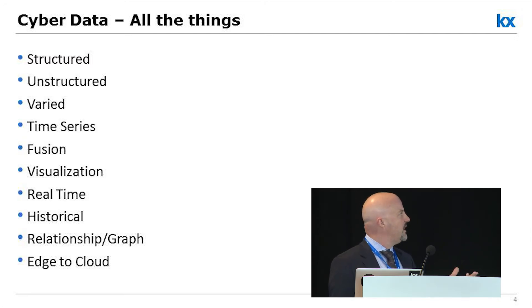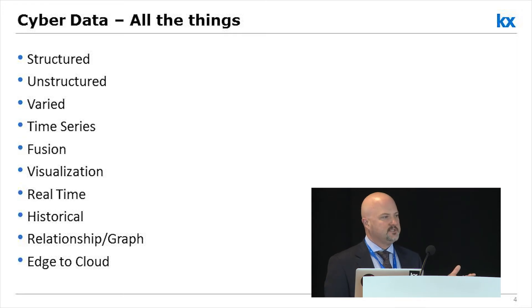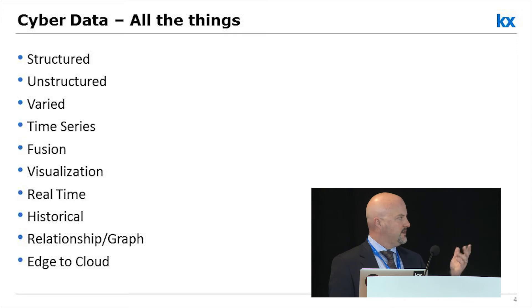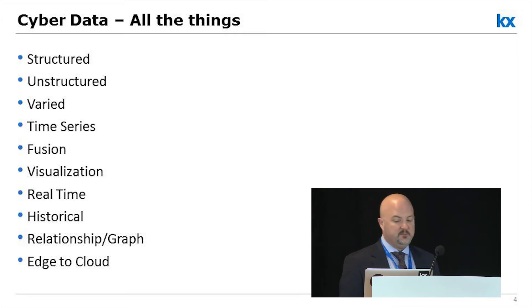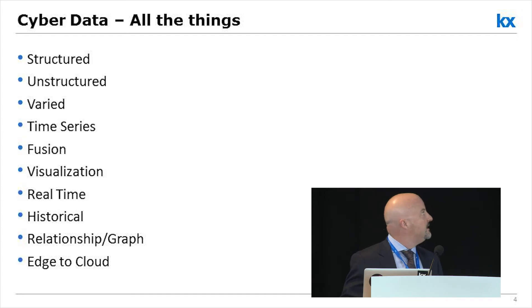BGP hijacking was recently in the news and has become an increasing issue. Someone BGP hijacked the Amazon AWS DNS IP ranges to do some crypto-jacking. I'll also talk about edge to cloud a little bit.